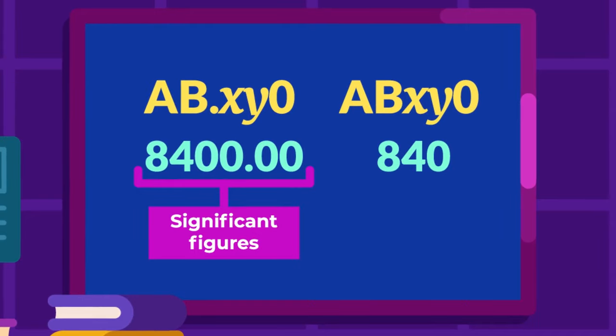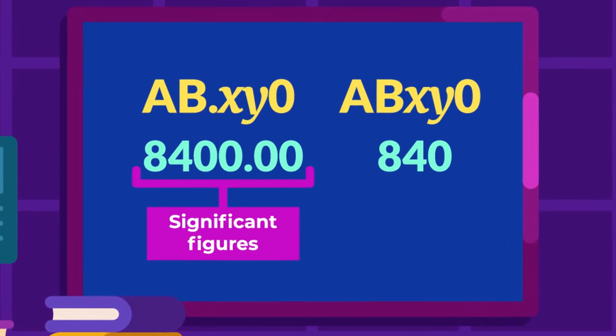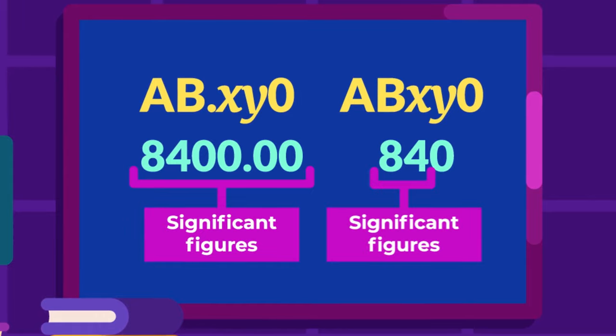Trailing zeros in a whole number without a decimal point shown are not significant. So, 840 has two significant numbers.